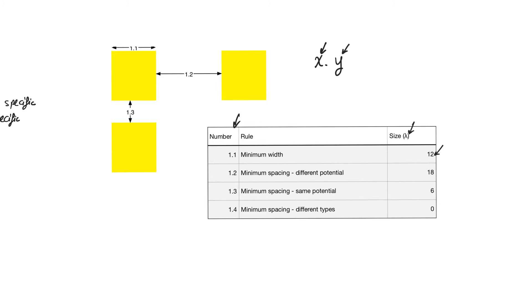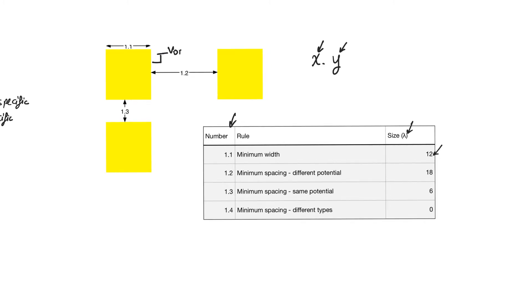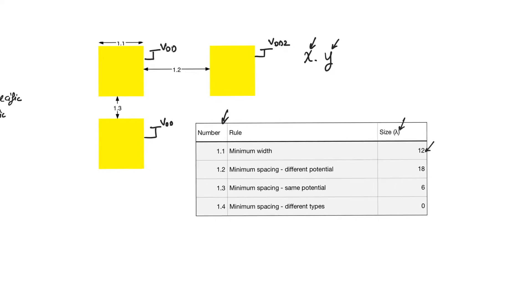For example, rule 1.1 states that the minimum width of a well is 12 lambda. When we have two wells, they must be separated by at least 18 lambda, but only when connected to different potentials. If both wells are connected to the same potential — most of the time an n-well is connected to VDD — the separation is only 6 lambda. If the two wells use different supply values for the well contact, they must be separated by 12 lambda. Rule 1.4 refers to multi-well processes where an n-well and p-well could be abutted without any separation.